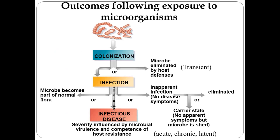When our body is exposed to a microorganism, first what happens is colonization — microorganisms start to colonize on the body and stay there. Some will multiply and grow; some will die. After colonization, some microorganisms will be directly eliminated by the host defense system — a transient step where those bacteria will be gone immediately. But unfortunately, that doesn't happen all the time. Most of the time it will cause infection, where microorganisms enter the body and cause inflammation at the beginning.